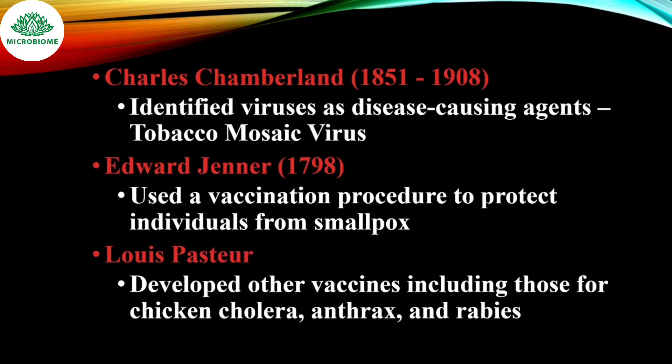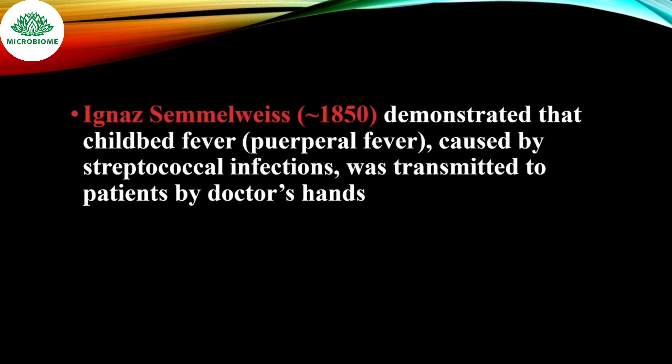Charles Chamberland (1851–1908) identified viruses as disease-causing agents, including the tobacco mosaic virus. Edward Jenner used a vaccination procedure to protect individuals from smallpox. Louis Pasteur developed other vaccines, including those for chicken cholera, anthrax and rabies. Ignaz Semmelweis demonstrated that childbed fever (puerperal fever) was caused by streptococcal infections transmitted to patients by doctors' hands.